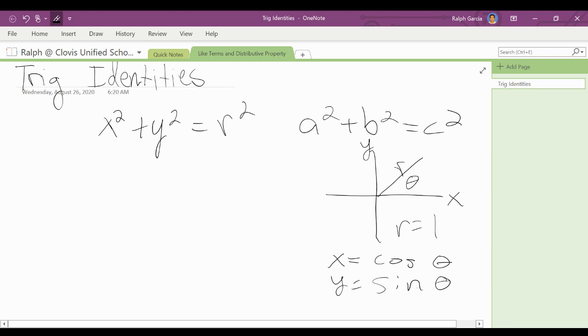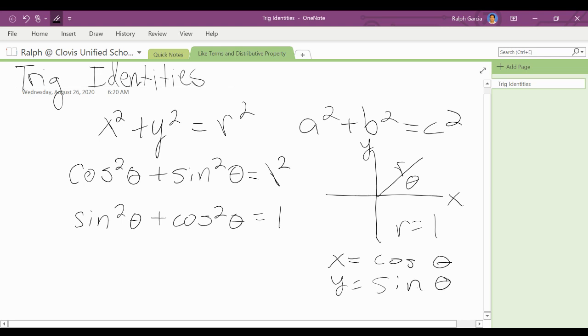So what I'm going to do here is I'm going to sub those in, and so what I can get is cosine squared theta plus sine squared theta equals 1 squared, because radius is one. And then typically when you see it in your books, they usually tend to write it as sine squared plus cosine squared. Same thing, doesn't matter which one comes first, but typically in books you'll see it sine squared plus cosine squared equals one.